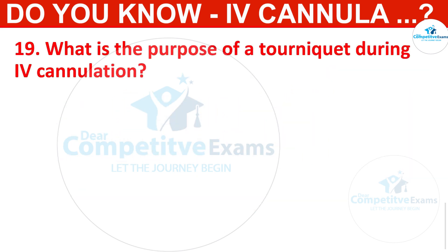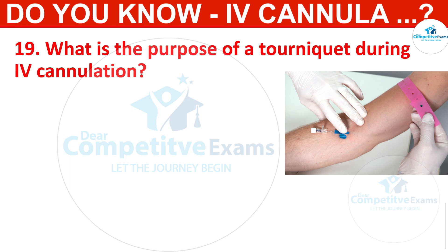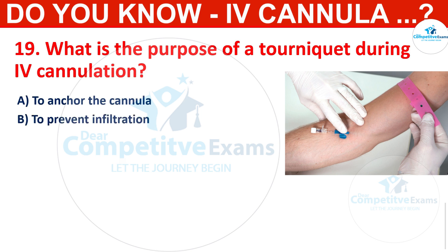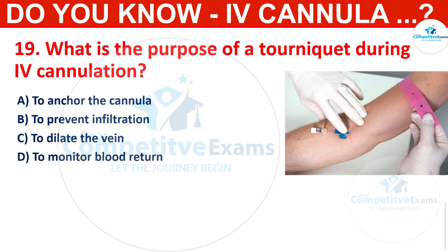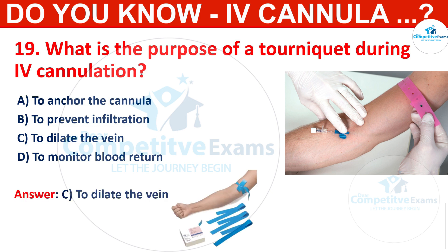Q19. What is the purpose of a tourniquet during IV cannulation? Options: to anchor the cannula, to prevent infiltration, to dilate the vein, or to monitor blood return. The correct answer is to dilate the vein. A tourniquet makes veins more visible and accessible for cannulation by causing venous dilation.